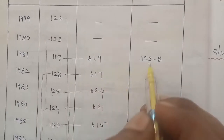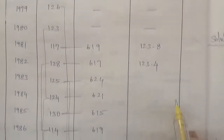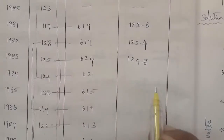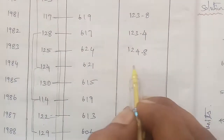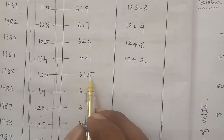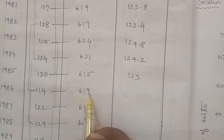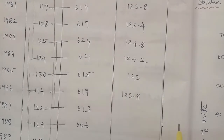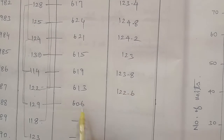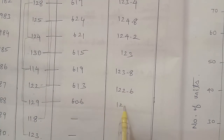Continue dividing each 5-year moving total by 5: the next values are 123.4, then 124.8, then 124.2. The next moving total 615 divided by 5 gives 123.8. Then 122.6, and finally 606 divided by 5 gives 121.2.